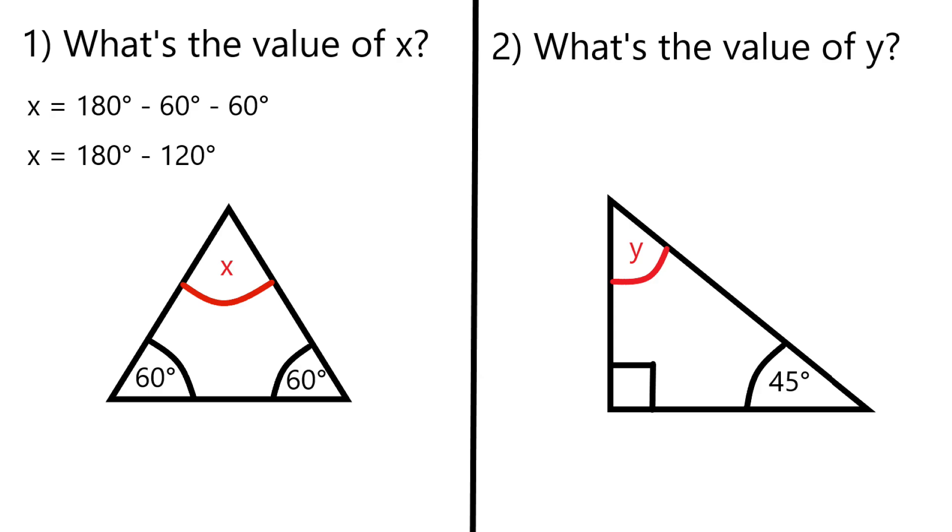Next line is x equals 180 minus 120, just to add in those two other angles together, and then x is going to be equal to 60 degrees.